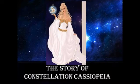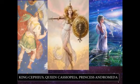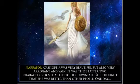The Story of Constellation Cassiopeia. Long, long ago, in a kingdom called Ethiopia, King Cepheus and Queen Cassiopeia ruled happily along with their daughter, Princess Andromeda. Cassiopeia was very beautiful but also very arrogant and vain. It was these latter two characteristics that led to her downfall. She thought that she was better than other people.